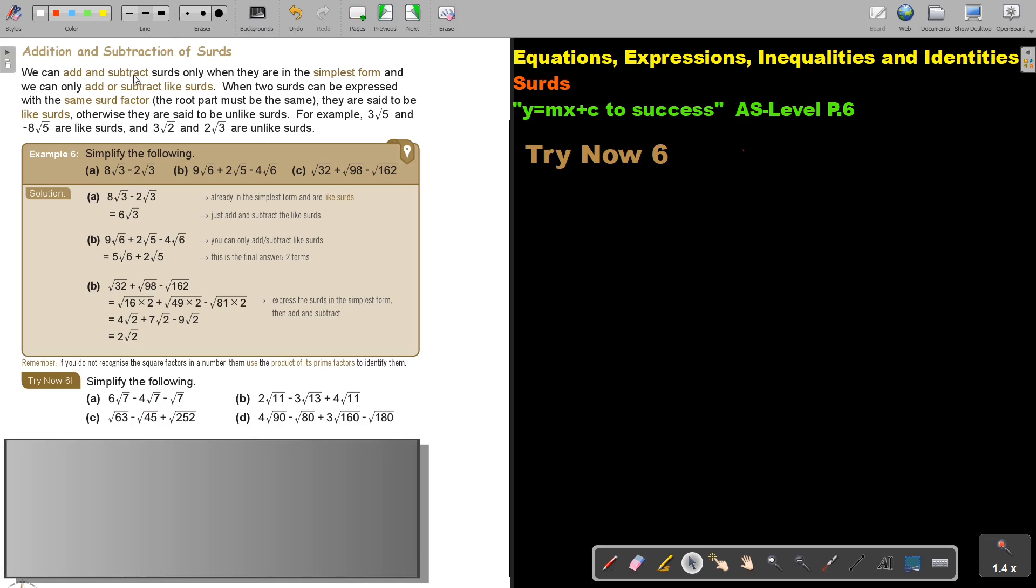We can add and subtract surds only when they are in the simplest form, and we can only add or subtract like surds. When two surds can be expressed with the same surd factor, that means the root part must be the same, they are said to be like surds. Otherwise, they are said to be unlike surds.